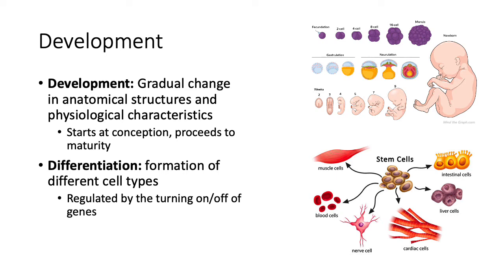When we talk about early development, there are a couple of terms to keep in mind. The first is development, which refers to the gradual change in anatomical and physiological structures and characteristics. Throughout conception, we start as a single-celled organism and go through mitosis to create a multicellular morula, and eventually a newborn. But development doesn't stop at birth — it proceeds until maturity.